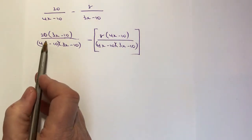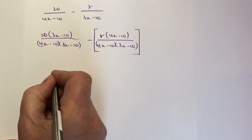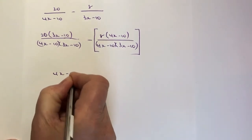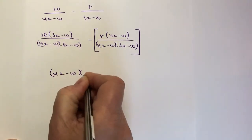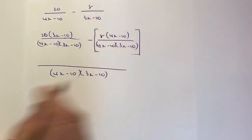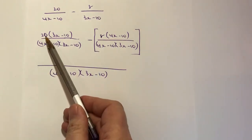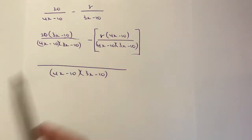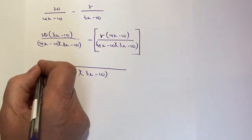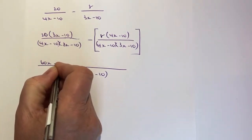Now in the bottom, it's fairly straightforward, and I can write that as one big fraction 4x minus 10 multiplied by 3x minus 10. And then a big long line along the top there. So the first thing is I'm going to multiply out this numerator.